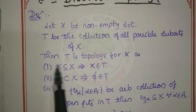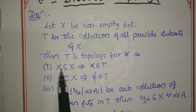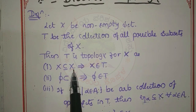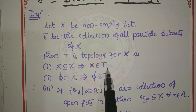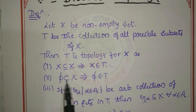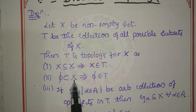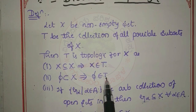First condition: X has itself as a subset of the same set, so X belongs to T. Second condition: the empty set is a common set of all sets, so phi belongs to T.